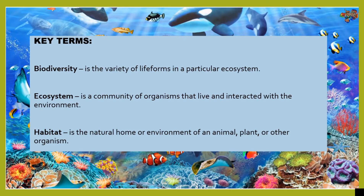Let's have our key terms. Biodiversity — it is the variety of life forms in a particular ecosystem. Ecosystem is a community of organisms that live and interact with the environment. Habitat is the natural home or the environment of an animal, plant, or other organism.